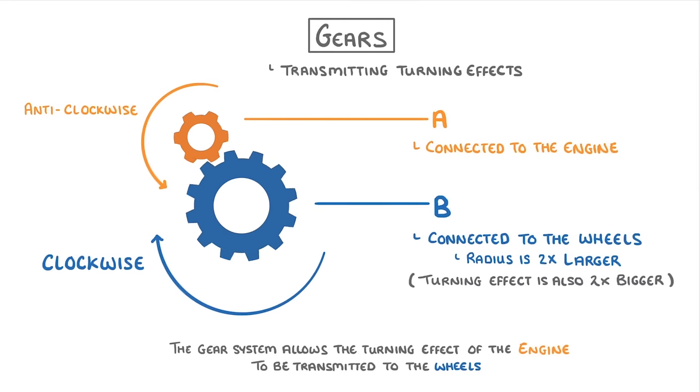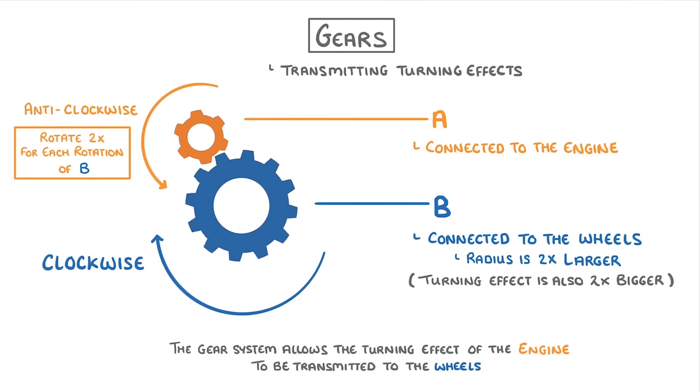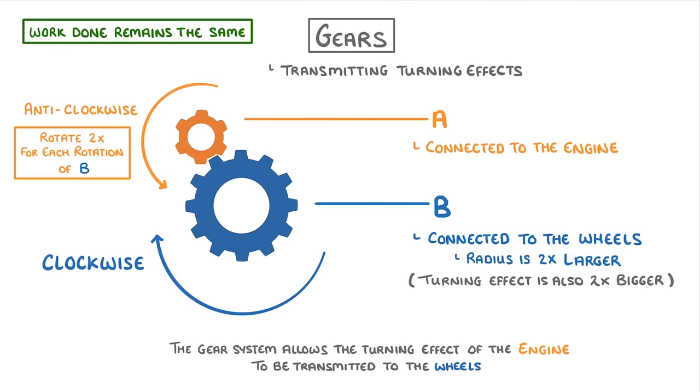Something else to notice is that gear A has to rotate two times for each rotation of gear B. So even though the turning effect is being magnified twofold, the total work done remains the same, because gear A is rotating two times as often as gear B.